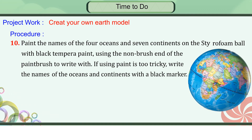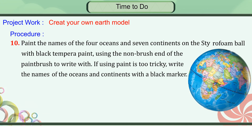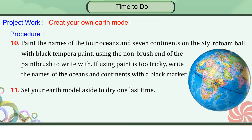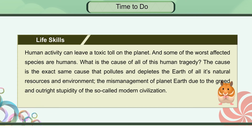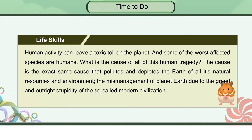Life skills: Human activity can leave a toxic toll on the planet, and some of the worst affected species are humans. The cause is the same that pollutes and depletes the Earth of all its natural resources and environment — the mismanagement of the Earth due to the greed and outright stupidity of so-called modern civilization.